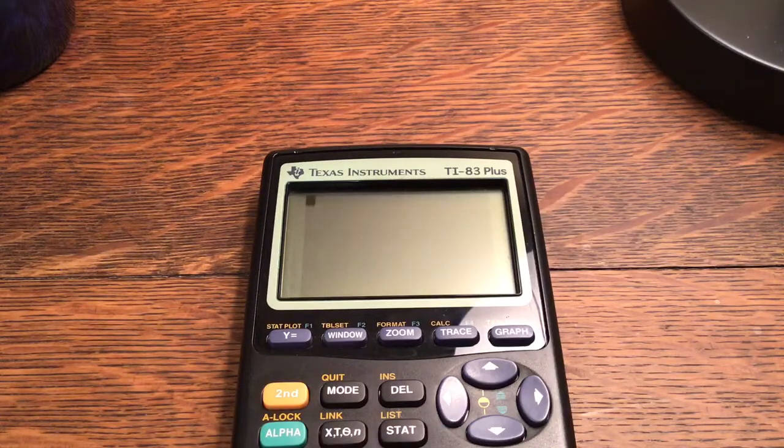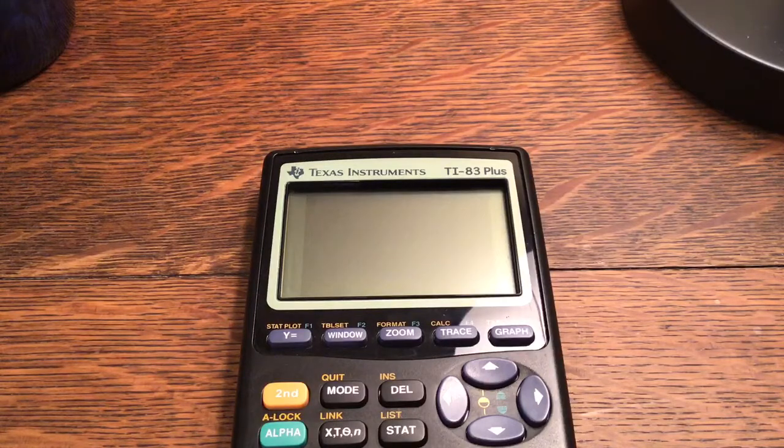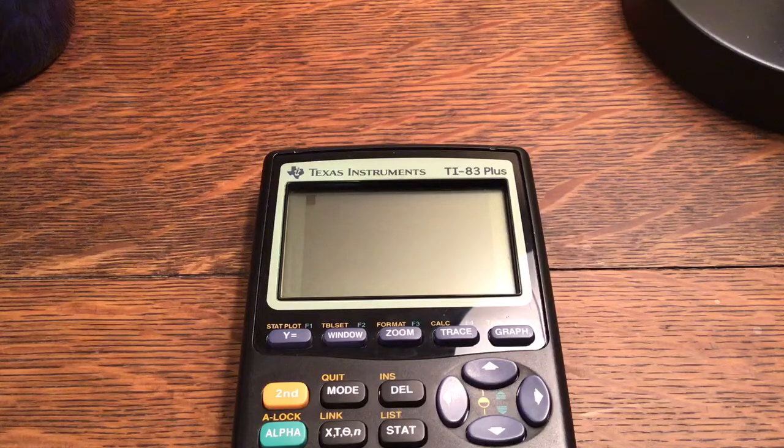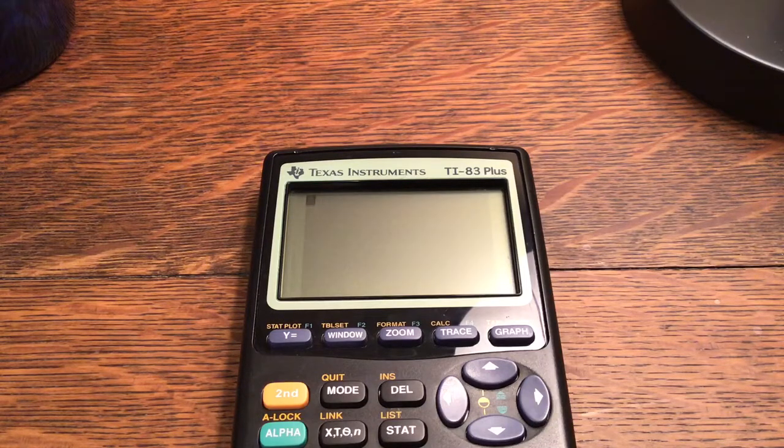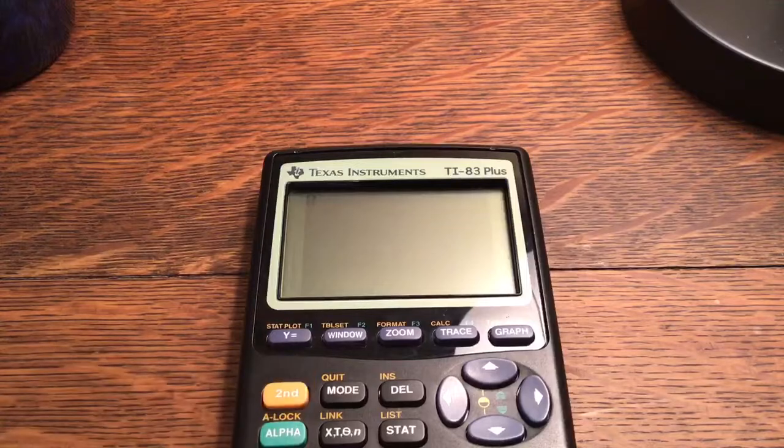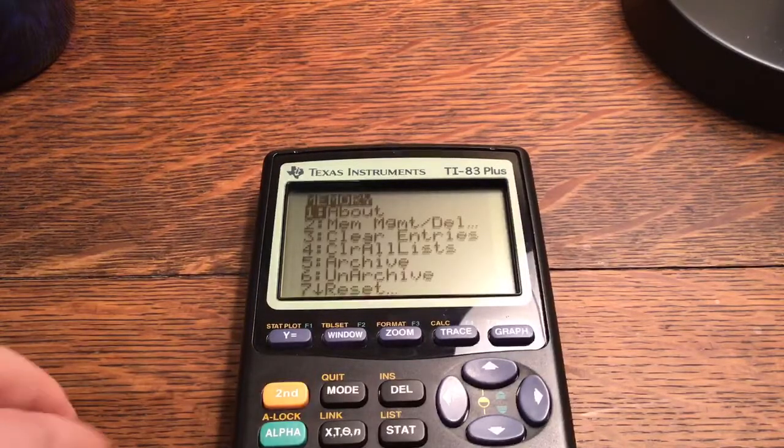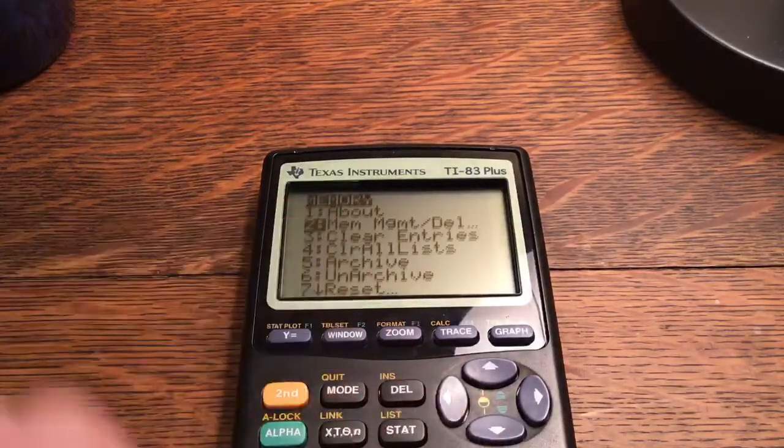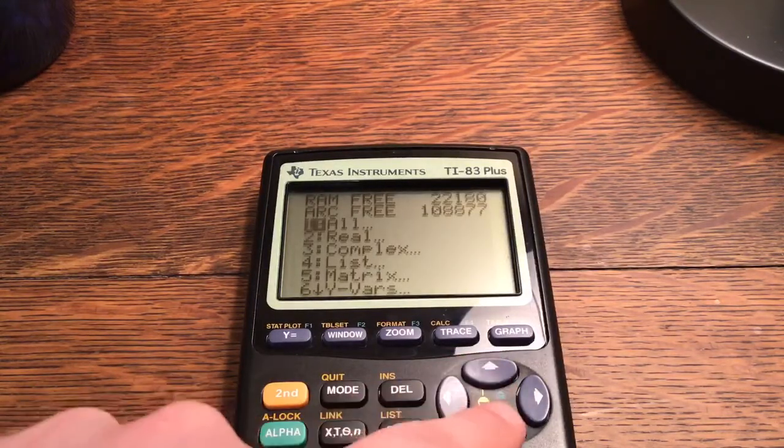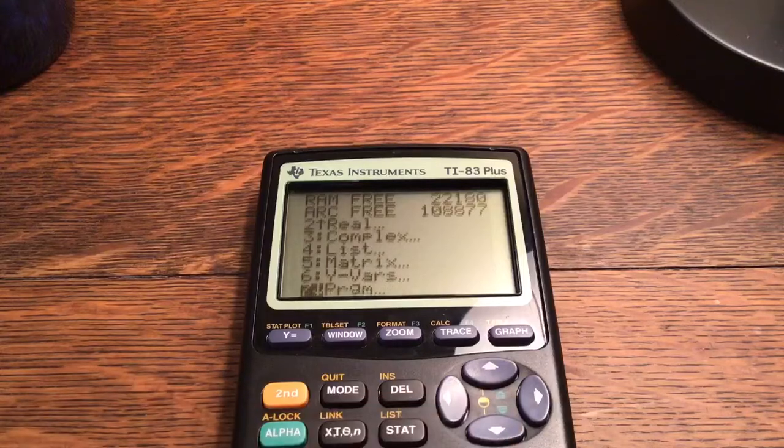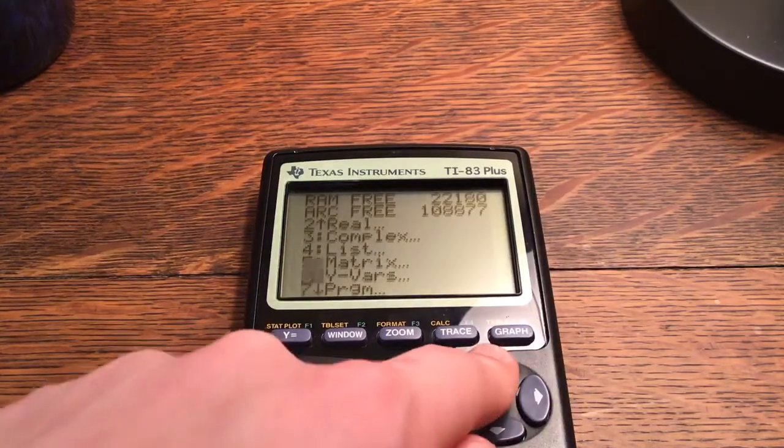So the memory leak issue, I'm going to show you how to fix that first. If you haven't made the first version of battle, you can skip to later in the video. Or you can watch this because it has useful information in case it happens to you in the future. The first thing we're going to do is go into second memory, go to memory management slash delete, go to all, or you can go down to PRGM or program. But I like just going to all.